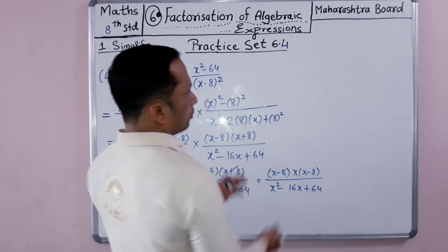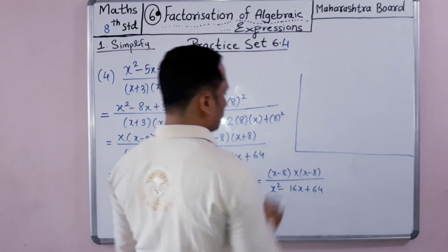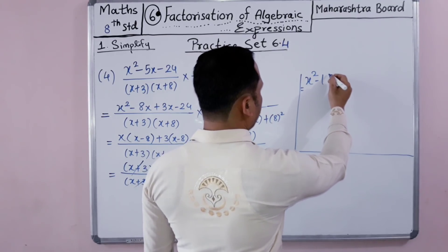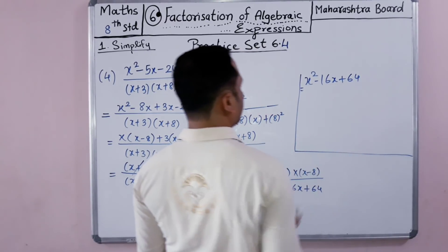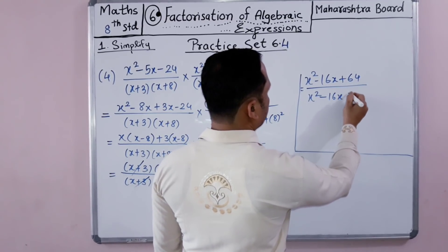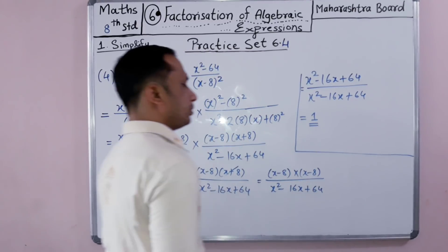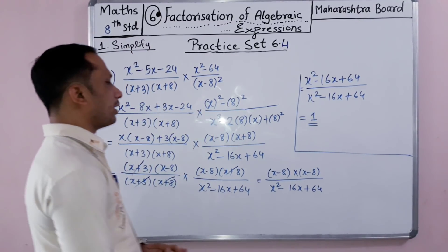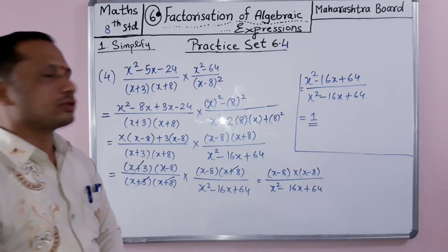After simplification, x minus 8 times x minus 8 in the numerator and x squared minus 16x plus 64 in the denominator are the same expression, so the result simplifies to 1. This is the solution for the fourth problem.